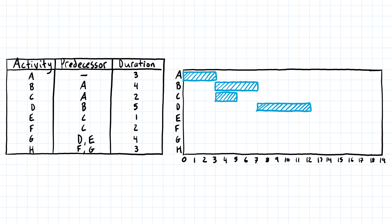Activity E depends on C, so it can't start until C is finished, and it's one day long. C ends at the end of the fifth day, so we drop down to the line for activity E — it's just one day, so we draw it right there. Activity F also depends on C and is two days long. We see where C ends, so F starts at the same point as activity E, and it's two days long.